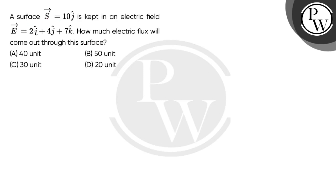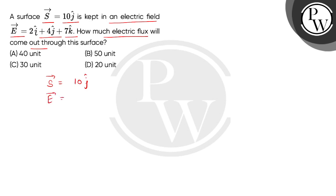Let's read the question: a surface S vector equals 10 j cap is kept in an electric field E vector equals 2 i cap plus 4 j cap plus 7 k cap. How much electric flux will come out through this surface? Given in the question: area vector is 10 j cap, directed along the y-axis, and electric field vector is 2 i cap plus 4 j cap plus 7 k cap.